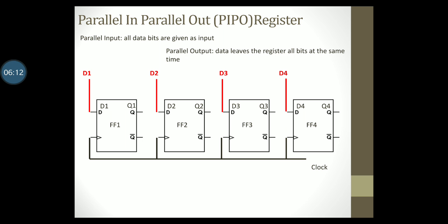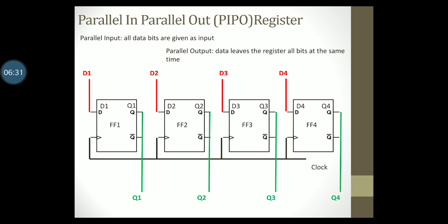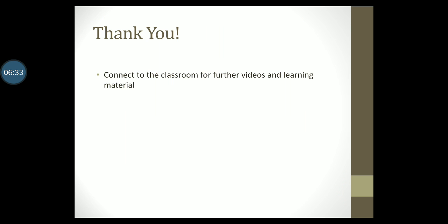To allow data to move out of the register, we will read the output of each individual flip-flop — that is Q1, Q2, Q3 and Q4. So there you have it, a very simple diagram to indicate a parallel in and parallel out shift register. That's all for now. Stay tuned to the classroom for more videos.